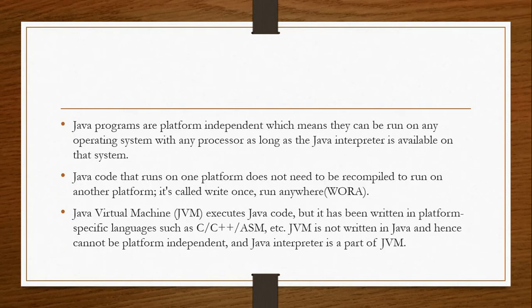Java is a platform-independent language. A Java program can run on any device — computers, mobile phones, smartwatches. We have platforms like Windows, Mac, Unix, Linux, and others. Java is a platform-independent platform, meaning you do not need to recompile it to run on another platform.